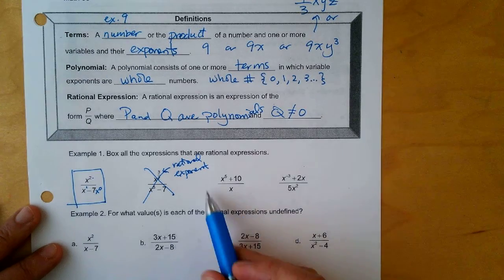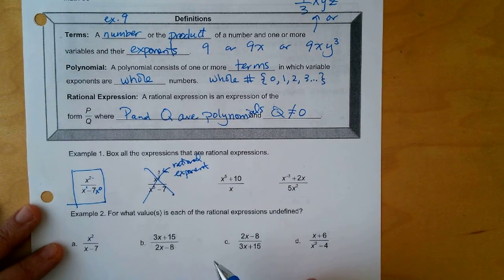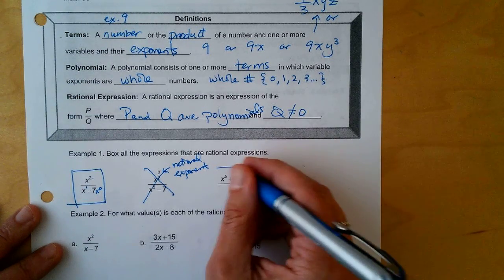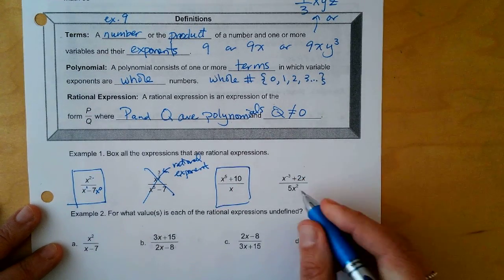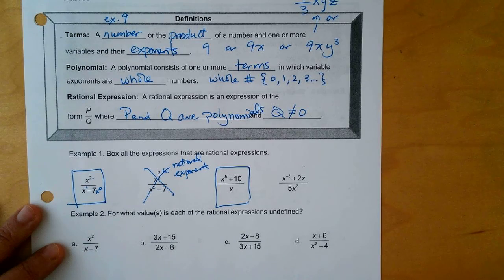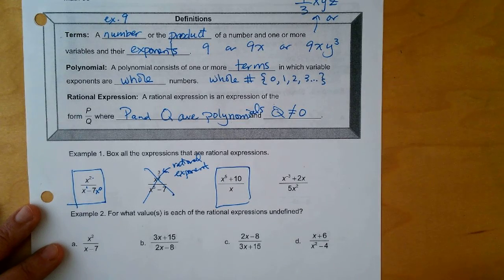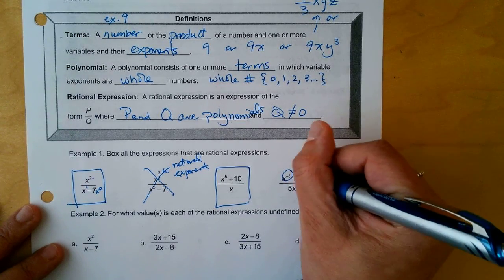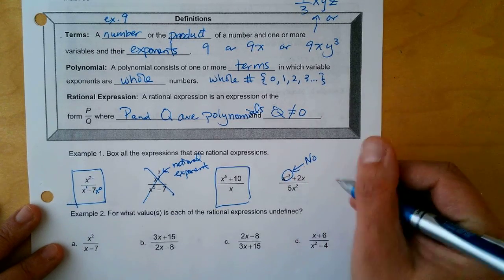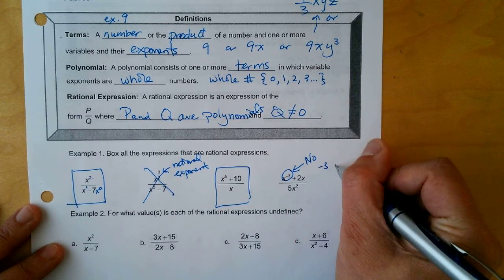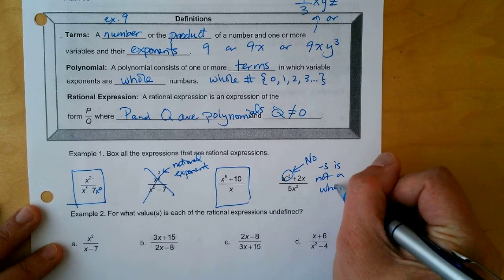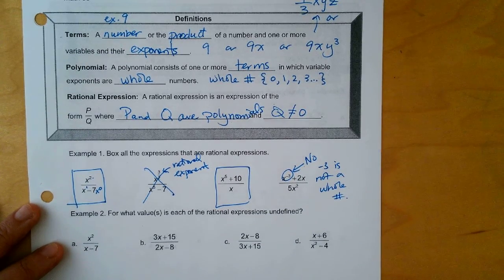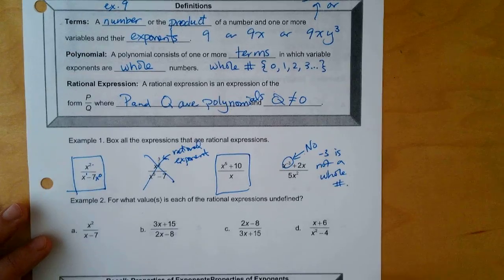What about this one? Is this a rational expression? Yes — it has whole number exponents. And the last one? No. Why? Because negative 3 is not a whole number exponent, so that makes it not a rational expression.